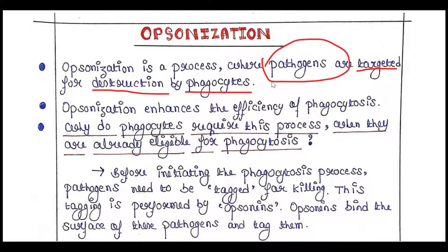Phagocytes are of different types: neutrophils, eosinophils, monocytes, macrophages, dendritic cells, and mast cells. These six types are phagocytic cells. Opsonization is a process that enhances the efficiency of phagocytosis by phagocytes.